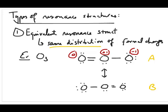If you do the formal charge calculation for structure B, you'll see one oxygen is negative one, one is plus one, and one is zero. What I mean by the same distribution is that all the atoms have exactly the same formal charges distributed among them. You get zero, plus one, and negative one — and they're all on oxygen atoms.